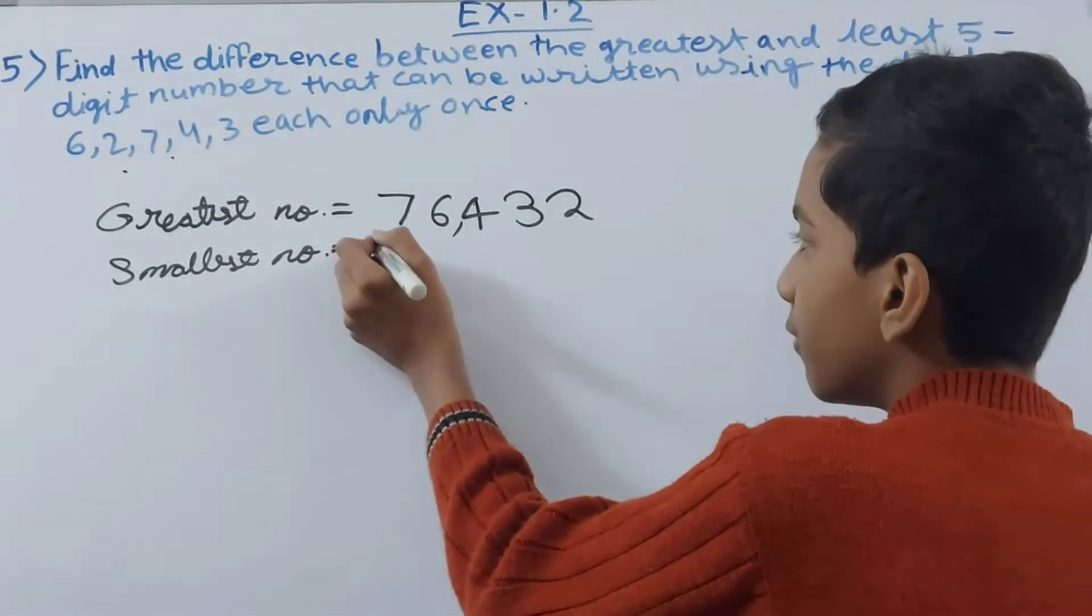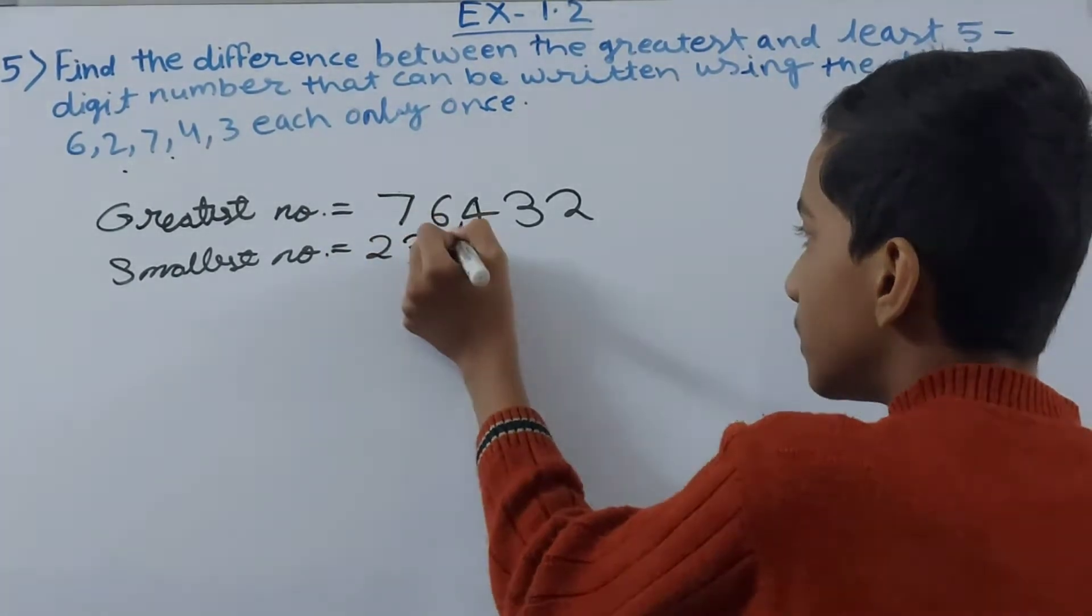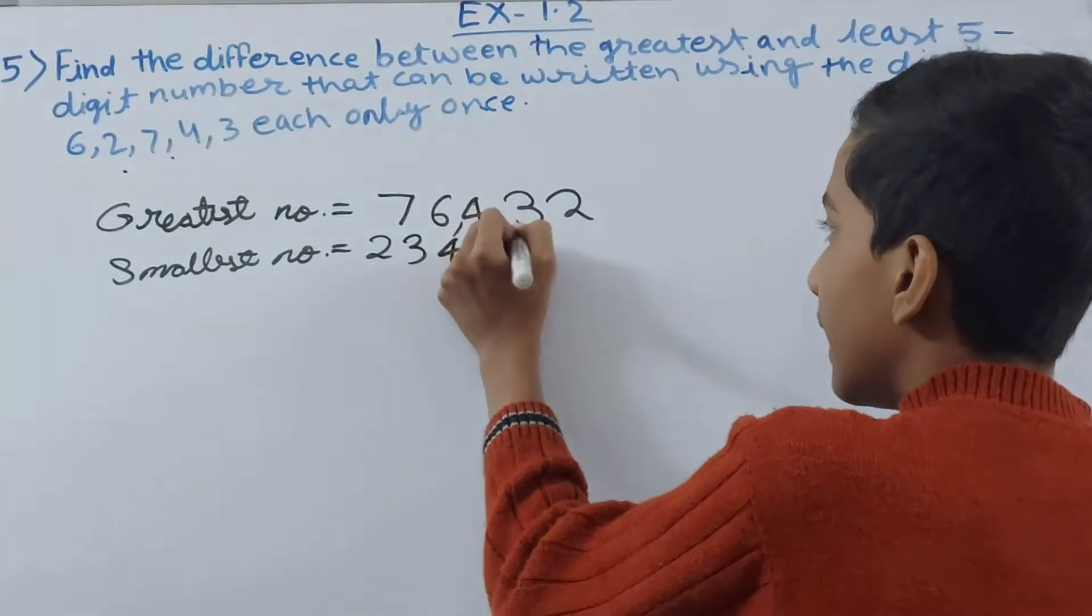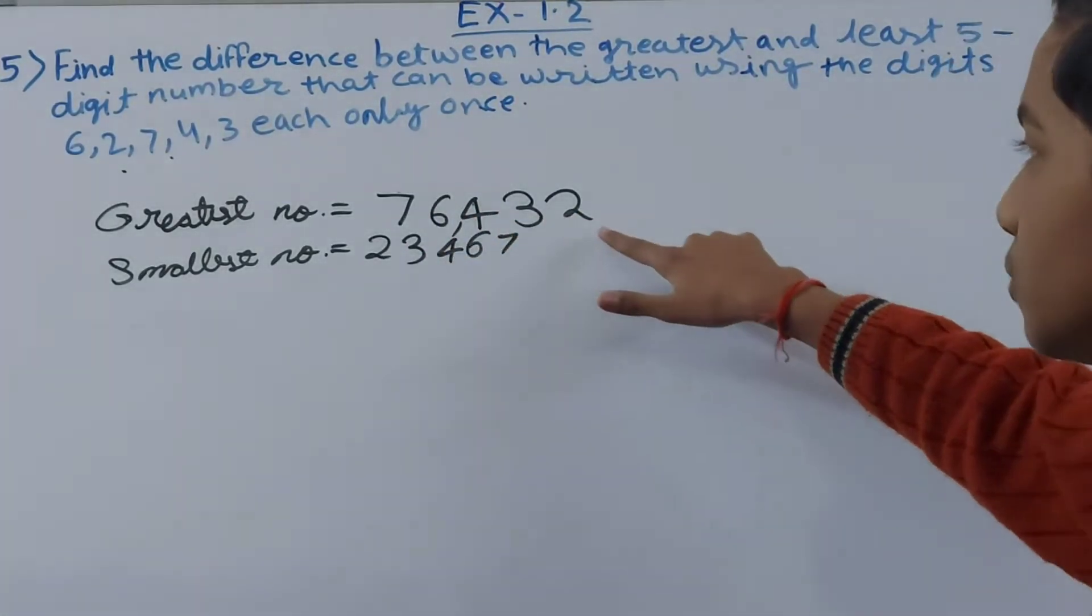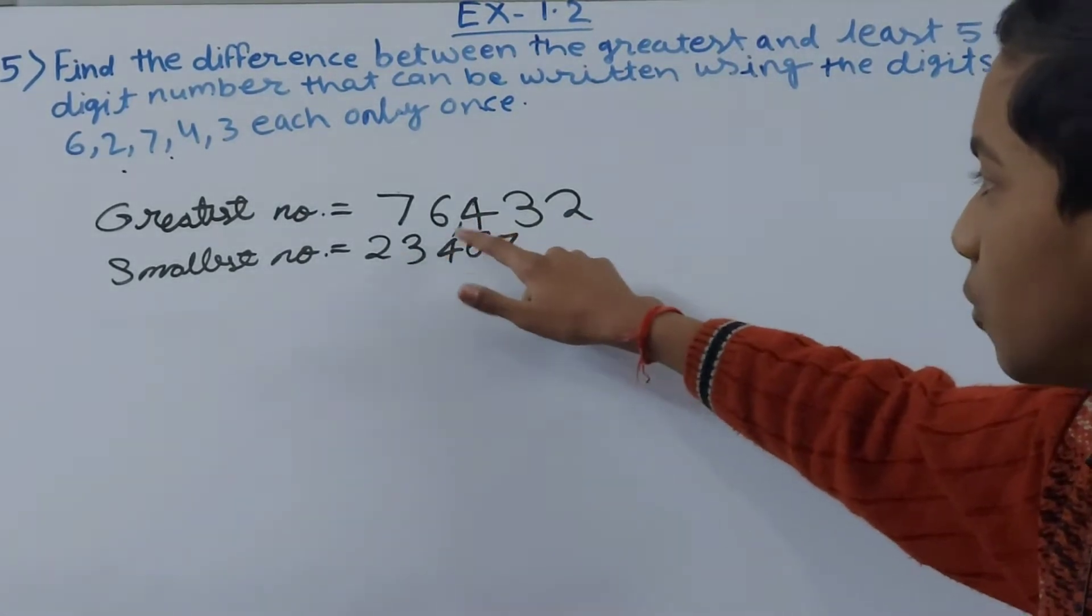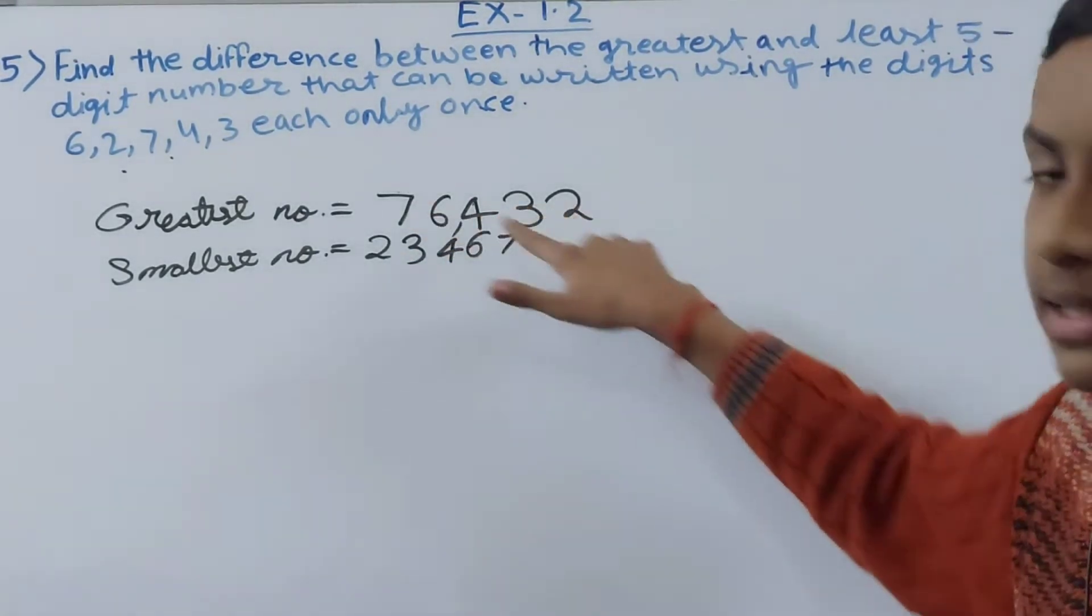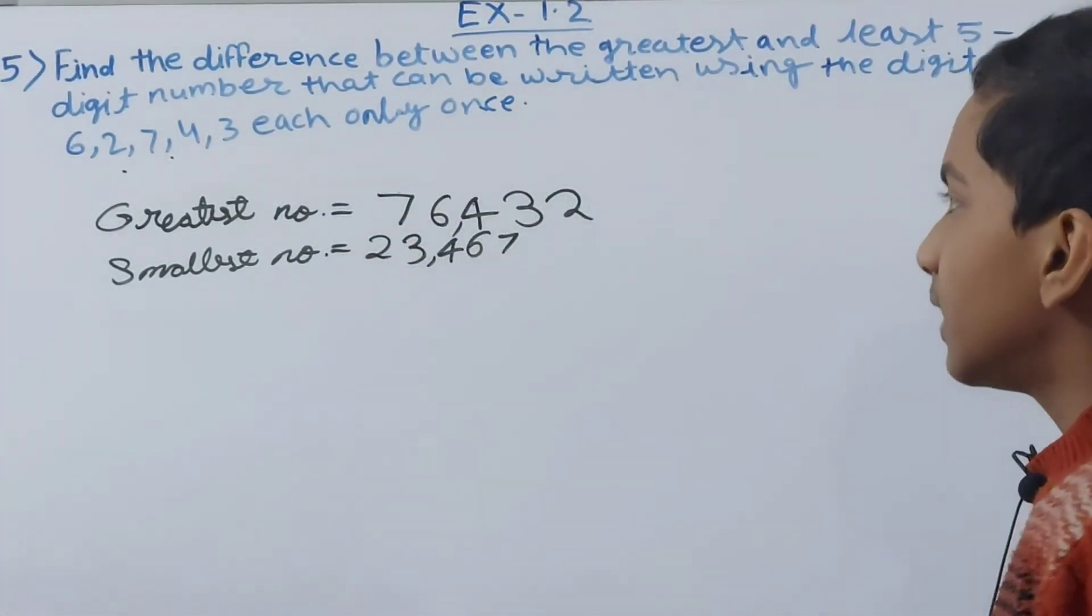So if you go by ascending order we have 2, then 3, then 4, then 6, and then 7. And if you would have reversed 76432, then 2 will come first, 3 next, 4 then, and then 6 and then 7. Reversing can also give you the smallest number.